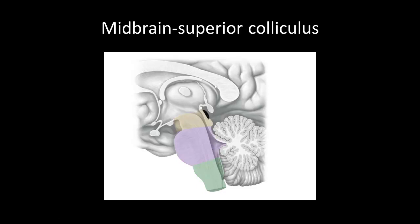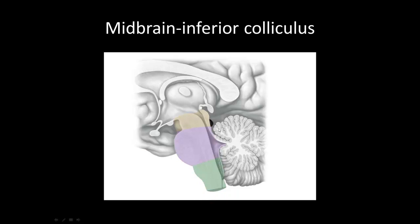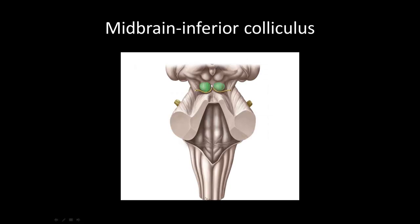Next we have the superior colliculus — a posterior bulge on the midbrain involved in visual processing. And the inferior colliculus, also on the posterior aspect of the midbrain, involved in auditory processing. A helpful mnemonic: your eyes are located over your ears, so the superior colliculus handles visual processing and the inferior colliculus handles auditory processing.